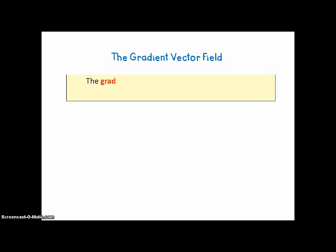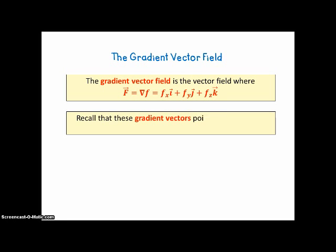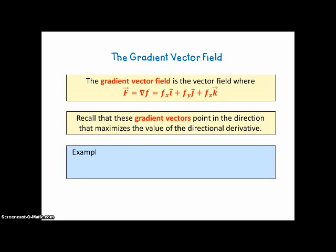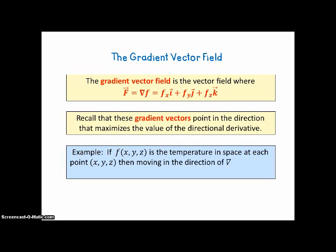The gradient vector field is a special vector field where F is defined as the gradient vector, consisting of the partial derivatives with respect to x, y, and z times i, j, and k respectively. Recall that these gradient vectors point in the direction that maximizes the value of the directional derivative. For example, if f(x,y,z) is the temperature in space at each point, then moving in the direction of the gradient vector field will warm you up faster than moving in any other direction.